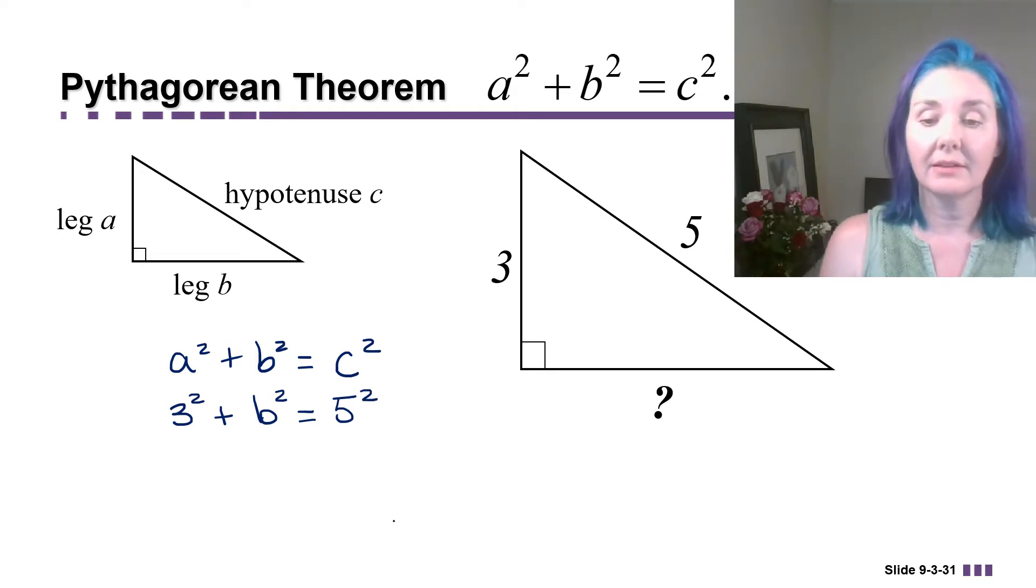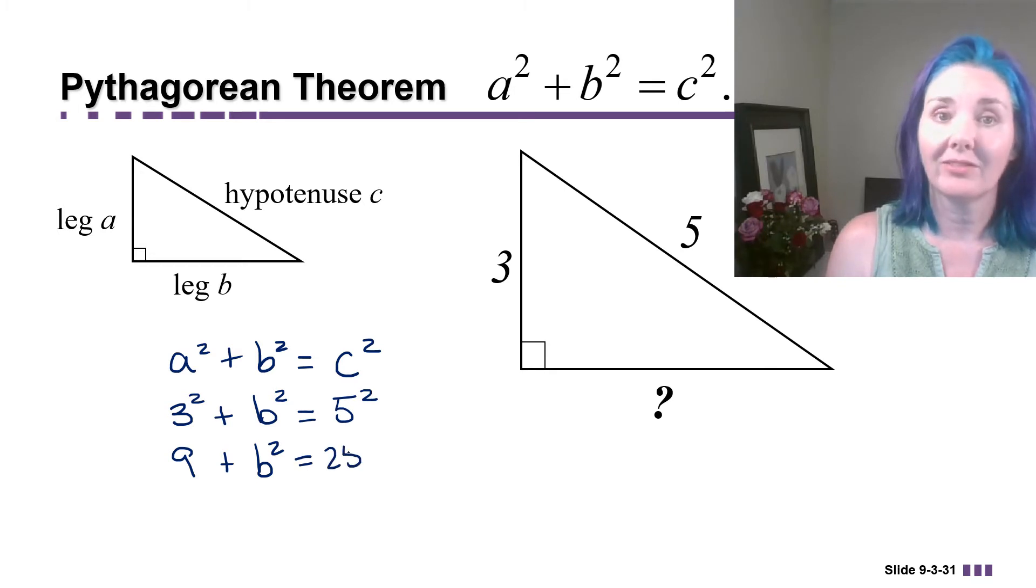So we have 3 squared plus b squared equals 5 squared. So that means 9 plus b squared is equal to 25.